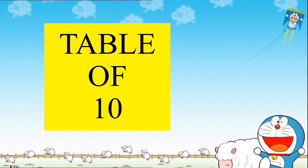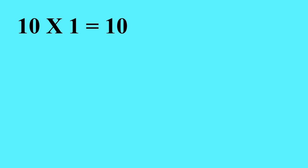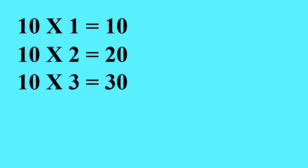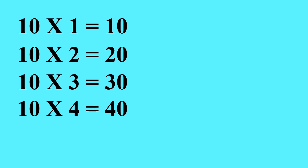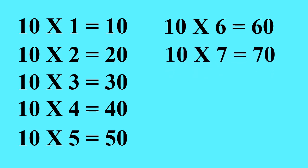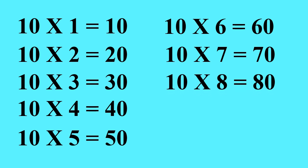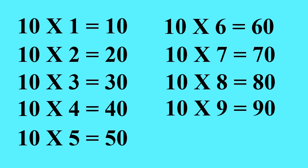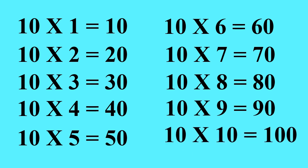Table of 10. 10 1s are 10. 10 2s are 20. 10 3s are 30. 10 4s are 40. 10 5s are 50. 10 6s are 60. 10 7s are 70. 10 8s are 80. 10 9s are 90. 10 10s are 100.